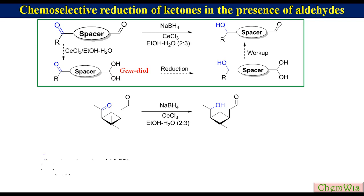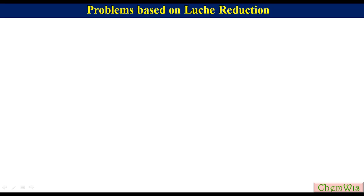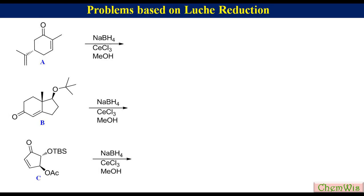Similarly, if we allow this cyclopentane derivative to react under the same reaction condition, it will give this alcohol with intact aldehyde. Now we will discuss some problems based on Luche reduction: predict the major product when compounds A, B, and C are reduced under Luche reduction conditions.